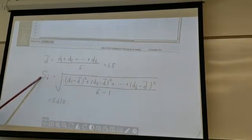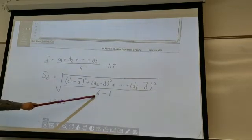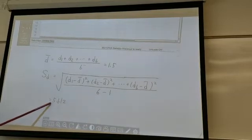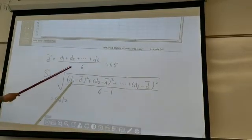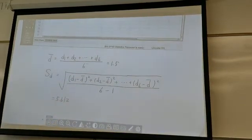Because this is the sample standard deviation, we don't divide it by 6, we divide it by 5. And you make the calculation and you find this number is 5.612. These two calculation outcomes, we need to use it later.